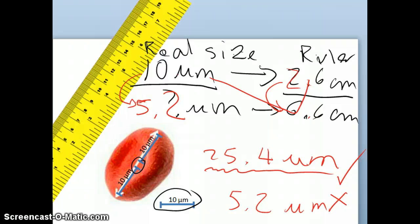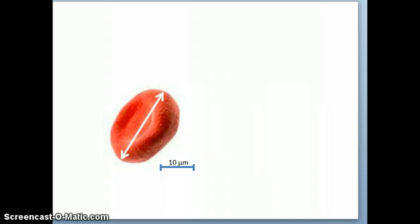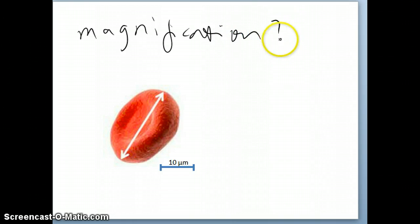Now, another way that they could ask you is, let's say, I have this red blood cell. They're asking you, what is the magnification? What is the magnification of this picture? Actually, they don't even have to give you the picture of this red blood cell at all. Just ignore it. All you have to care about is this.